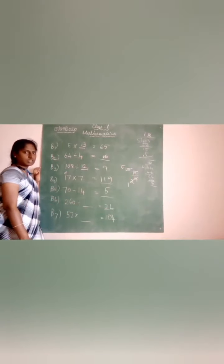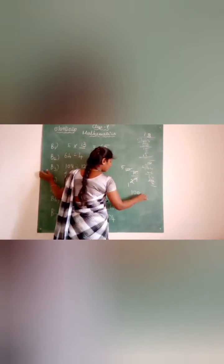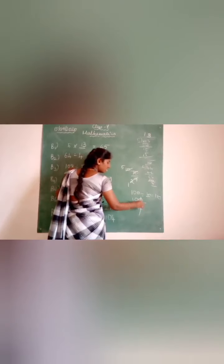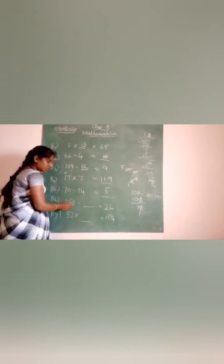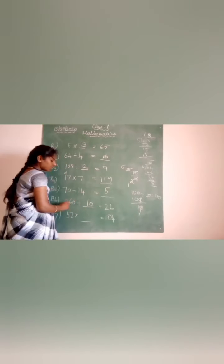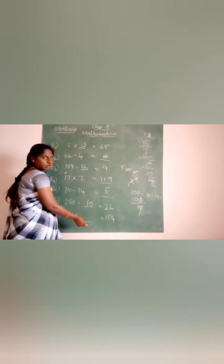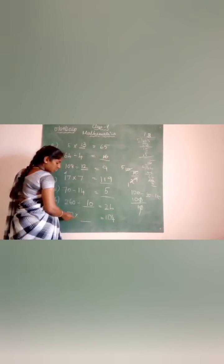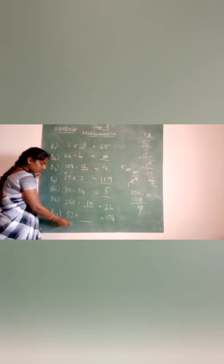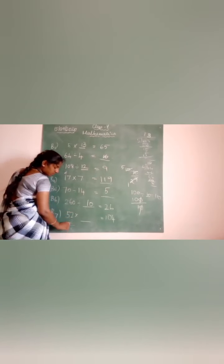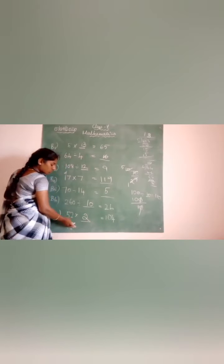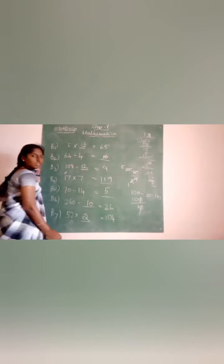260 divided by something equals 26 — the answer is 10, since dividing by 10 cancels one zero. Next, 100 divided by something equals 10 — the answer is 10. Then 52 times something equals 104: put 2 — 2 × 2 = 4 and 2 × 5 = 10, giving 104. So the missing number is 2.